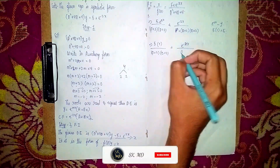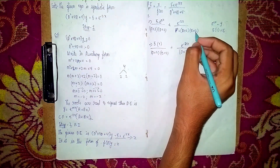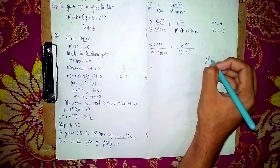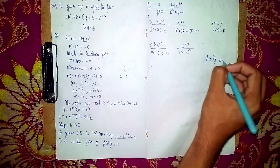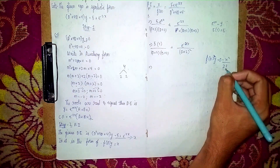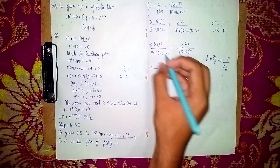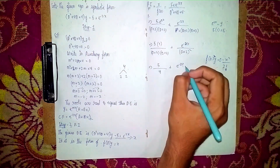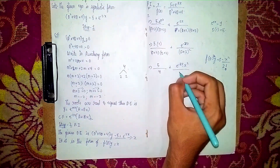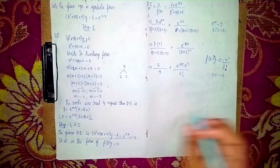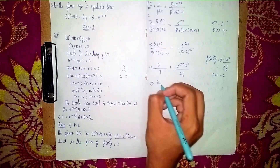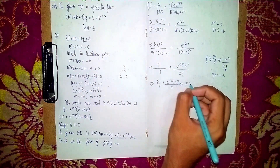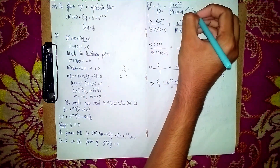For the second part, e^(−2x) / (D + 2)². If we substitute −2 into (D + 2), it becomes 0. So we use the condition: if f(D²)y = 0, then PI = e^(ax) · x² / 2!. Here 2! = 2, so the second part becomes e^(−2x) · x²/2. Therefore our particular integral is PI = 5/4 + e^(−2x) · x²/2. This completes Step 2.